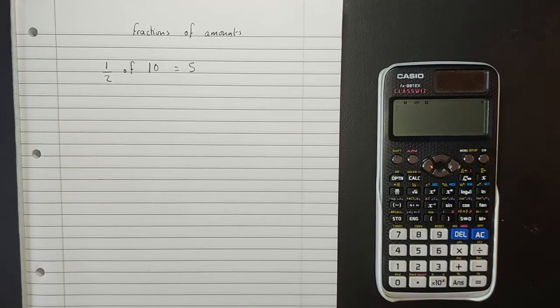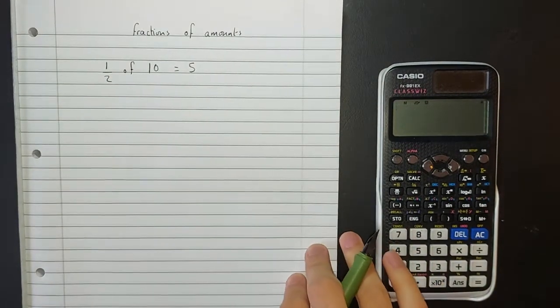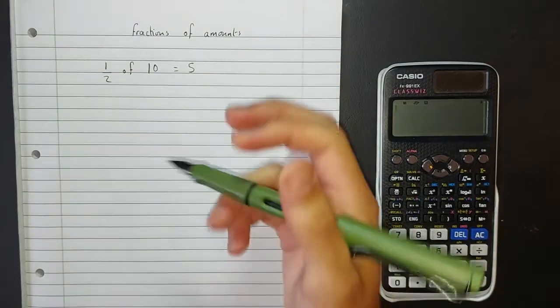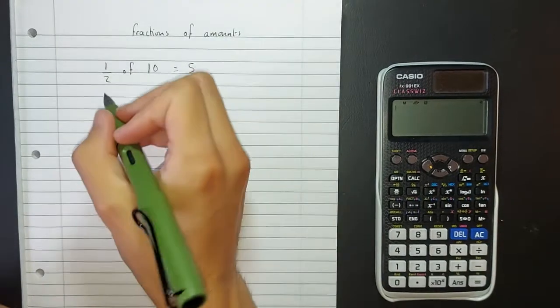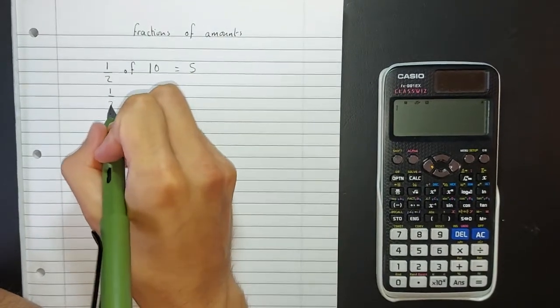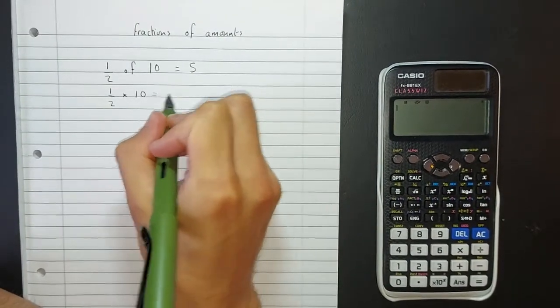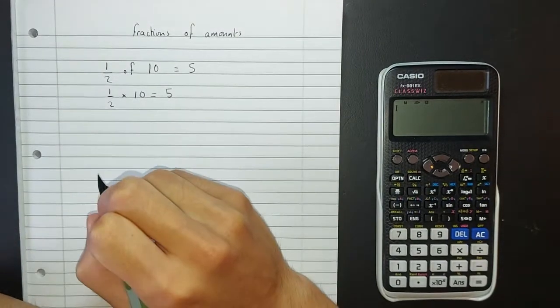What we're going to think of is, what is this actually working out? Another way that you can write this is one-half multiplied by ten. That means exactly the same thing, and they'll get you the same answer.